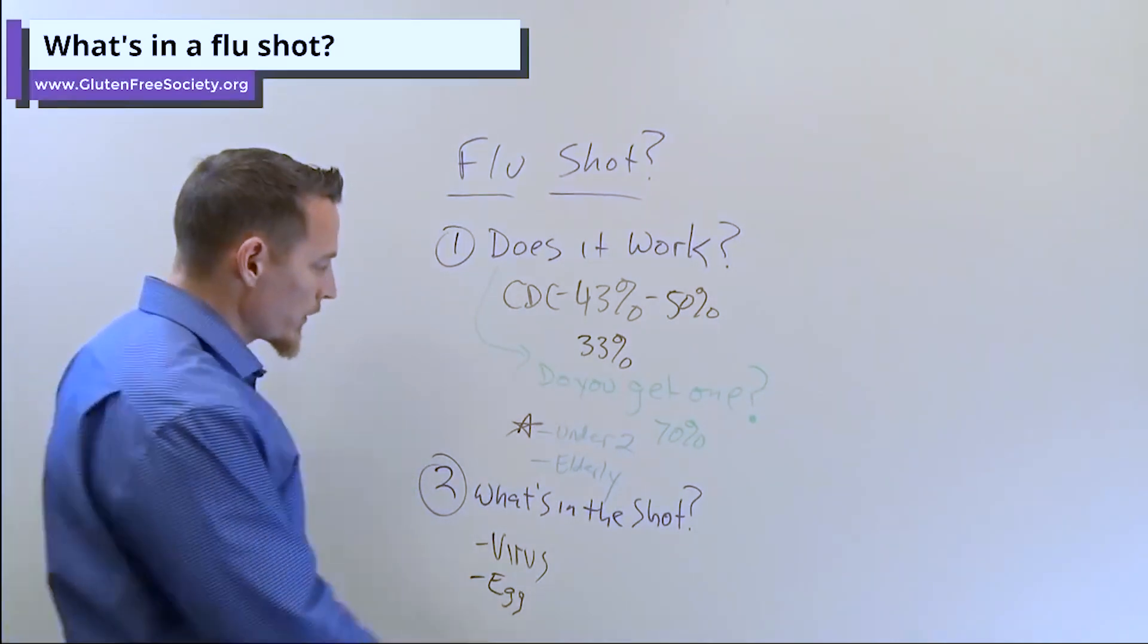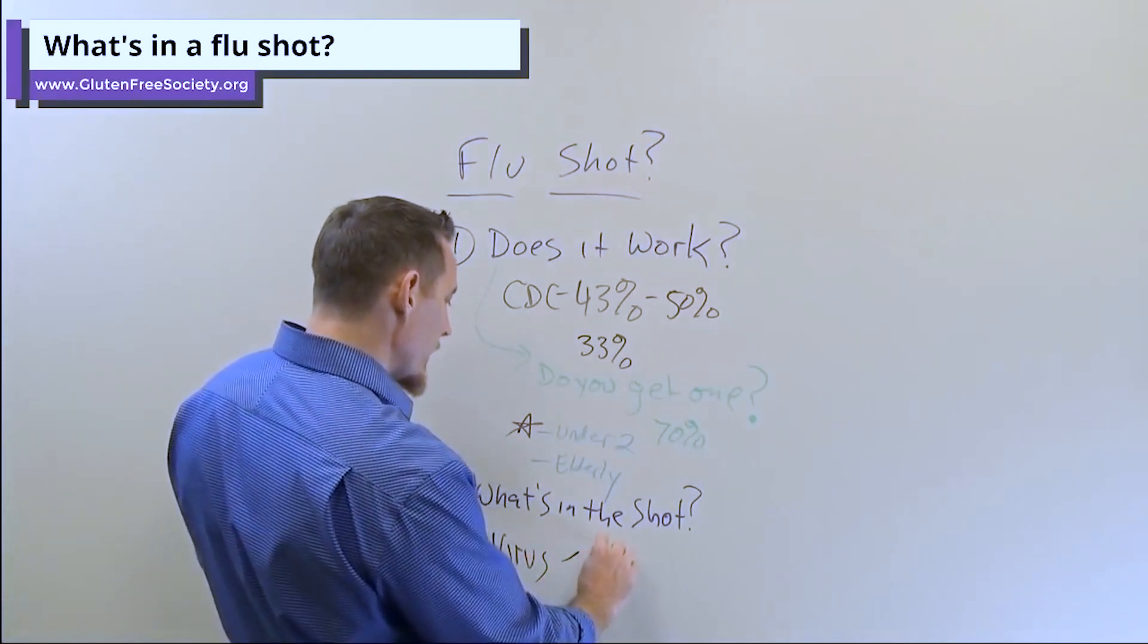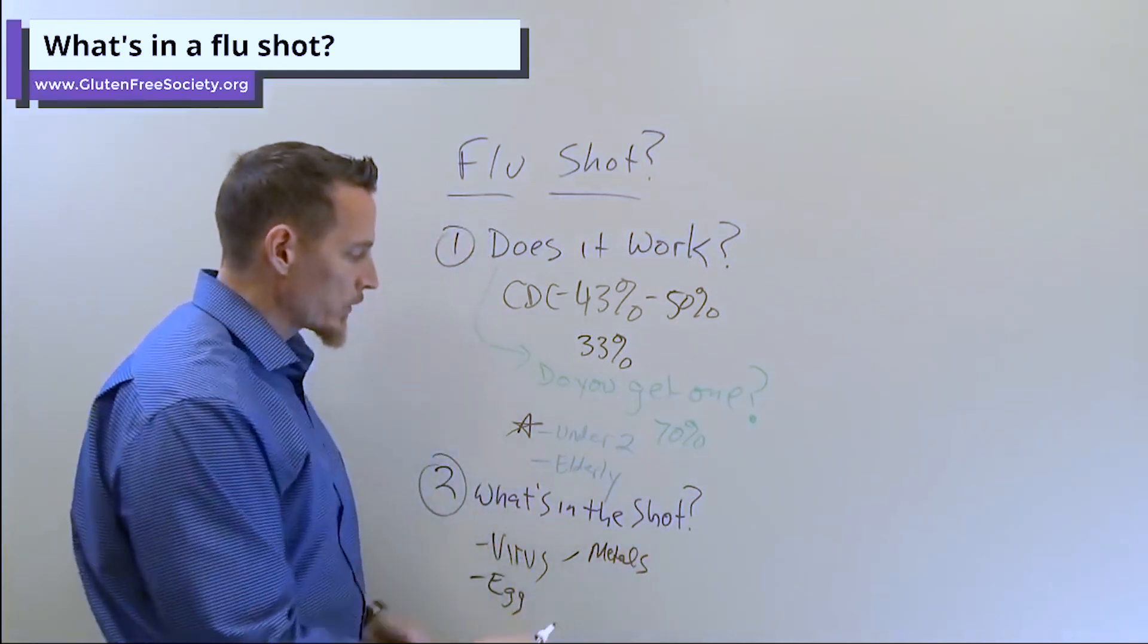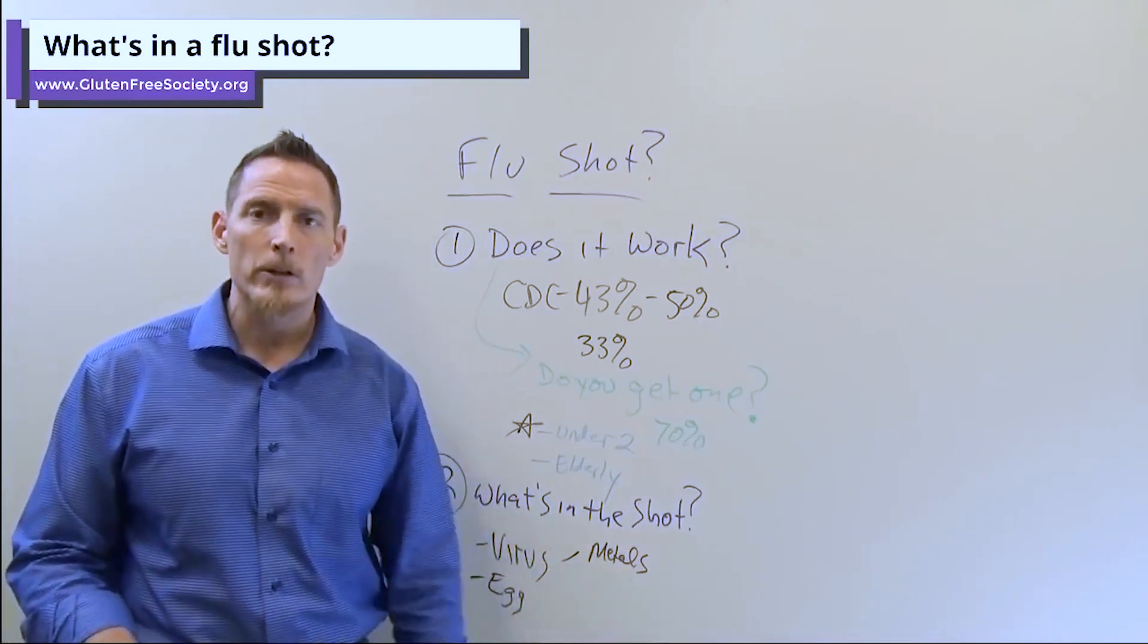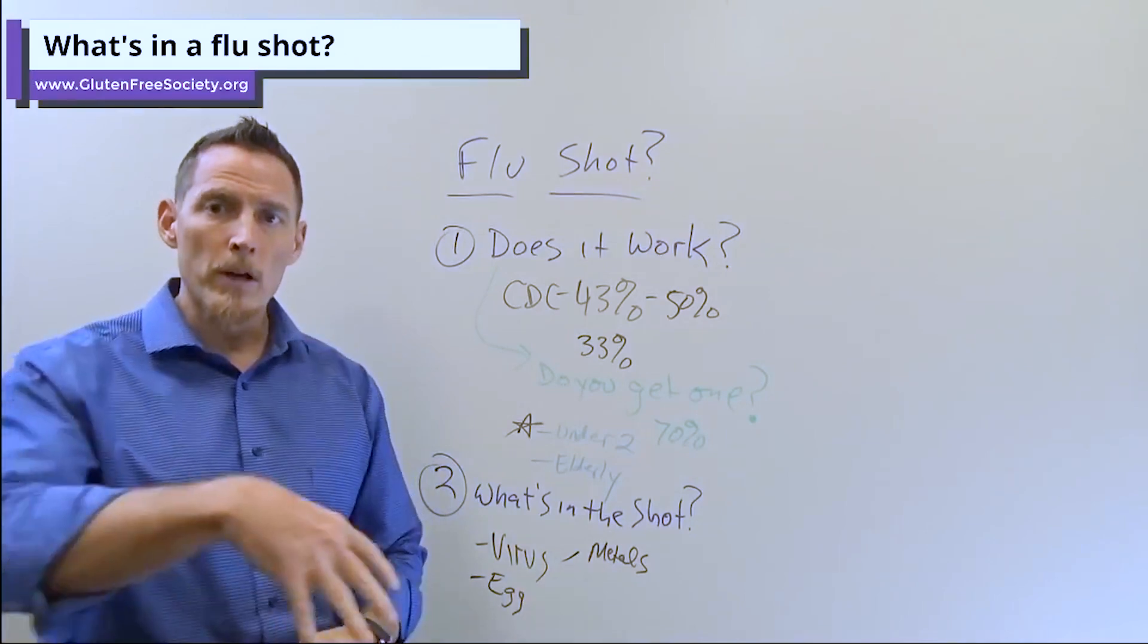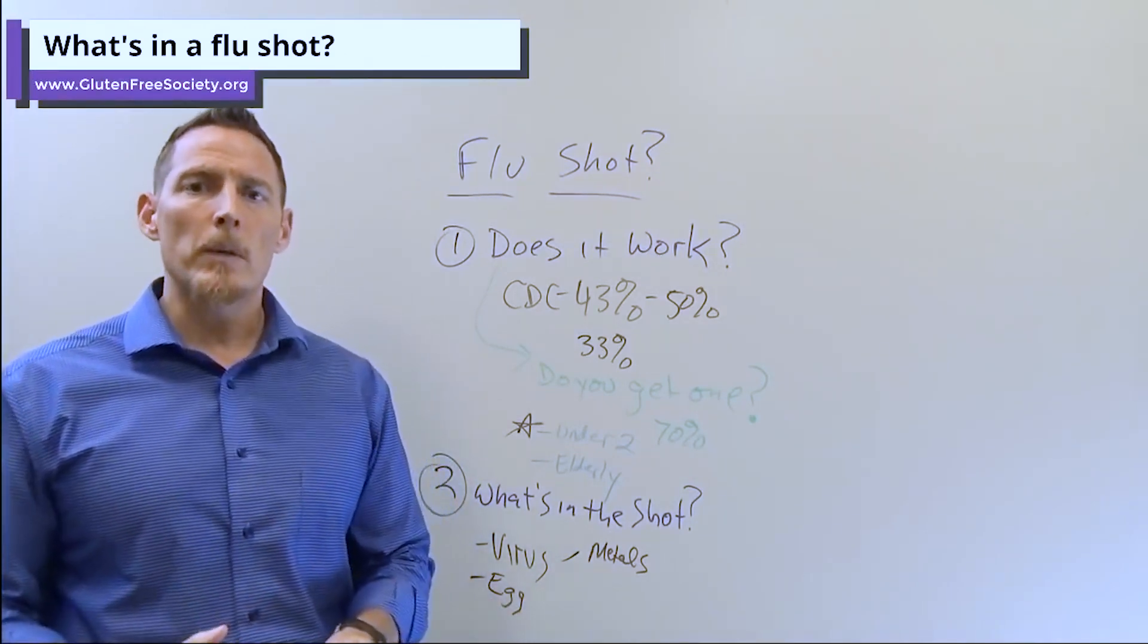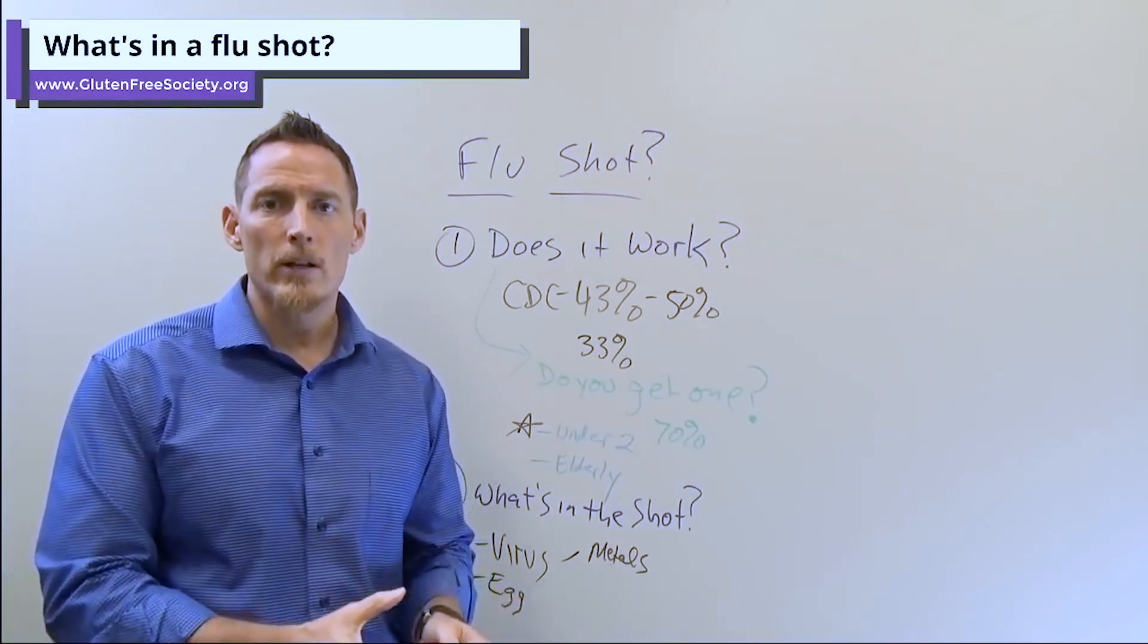There are a couple of other things in flu shots that I think we could argue are not healthy. These predominantly are metals. One of them, some flu shots contain thimerosal, which is a form of mercury, and some of them contain aluminum, which is another metal.